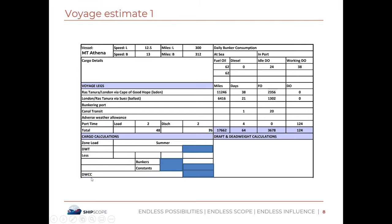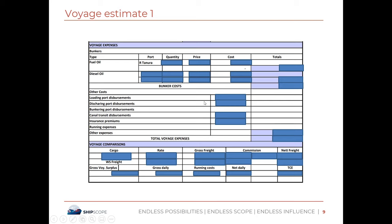Now let's calculate the deadweight cargo capacity. The total deadweight is 273,000. The bunkers required are 3,754 tons, calculated by adding 2,356 plus 1,302 plus 20 plus 76 (discharging diesel). Constants are 450 metric tons. Total deductions are 4,204 tons. Subtracting 4,204 from 273,000 gives a cargo carrying capacity of 268,796. However, the question already specifies we are to take 248,000 metric tons of cargo.